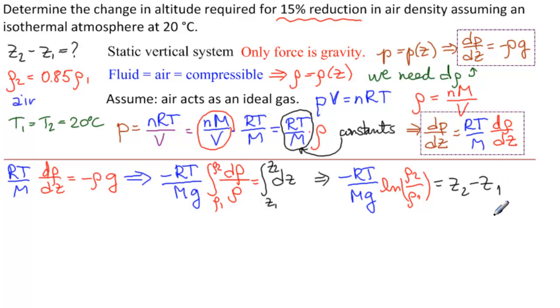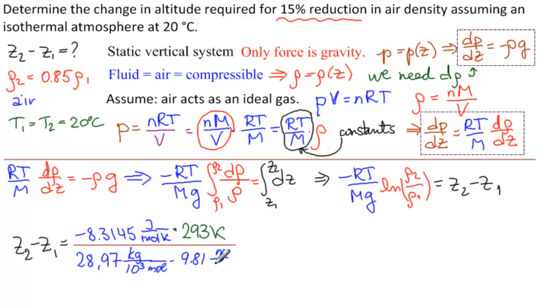So Z2 minus Z1, which is what we're looking for, is equal to minus 8.3145 joules per mole kelvin times T, but in kelvin, so 293 kelvin. M is 28.97 kilograms per kilomole, so we'll just write 10 to the third moles. This is a table value, you look it up, times 9.81 meters per second squared, times ln, and rho 2 over rho 1 is simply 0.85.